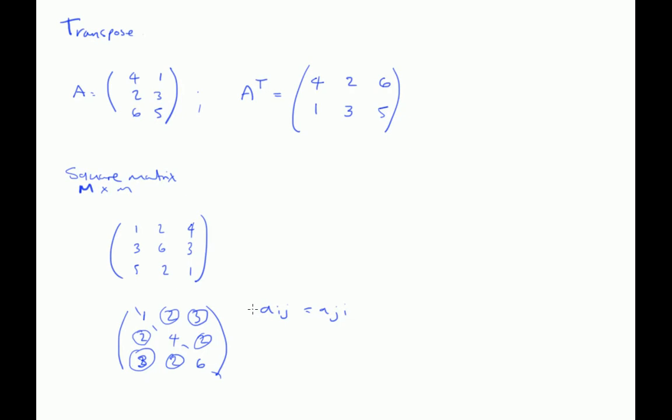And if we notice, going back to the transpose, we can see that A is actually equal to A transpose in this special case. Because if we transpose this matrix, our rows become the columns.